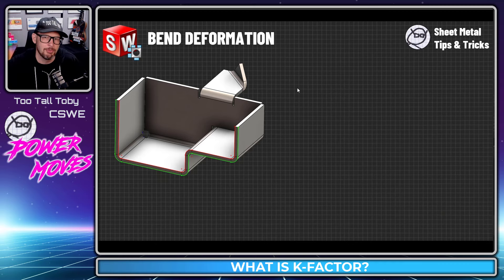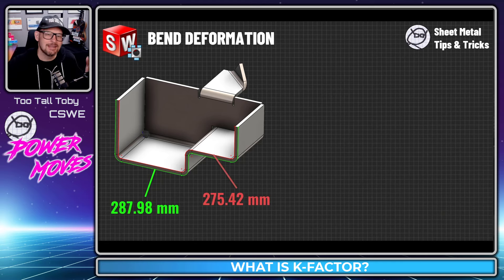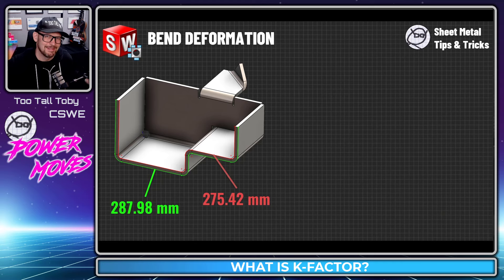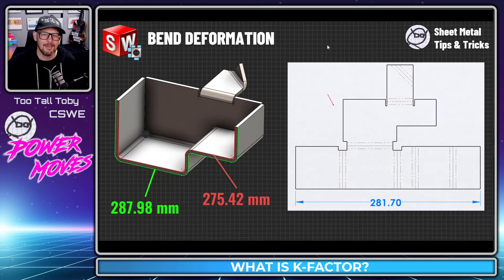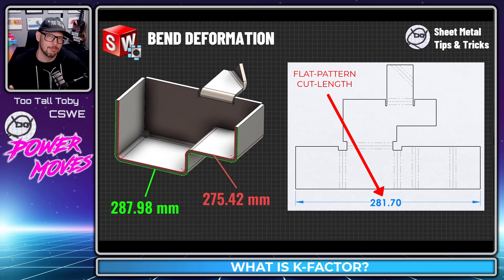That flat length is very important. But we can't just measure the outside edge of the sheet metal — 287.98 — and make the flat pattern that length. And we can't just measure the inside edges of the sheet metal — 275.42 — and cut the material to that length. These dimensions are not going to be correct. The flat pattern length is going to be somewhere in between, because of the material deformation that occurs in the corners.